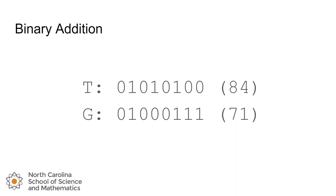And our goal is to add these two numbers. Now we should know, just by knowing that 84 plus 71 is 155, what our final answer should be, but what we're looking to do is determine how can we compute that using only the binary representations.